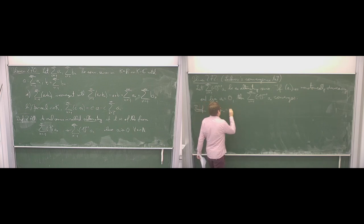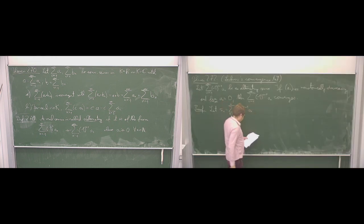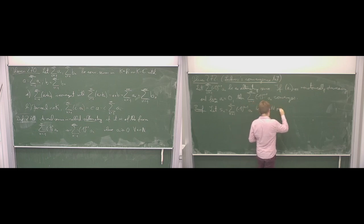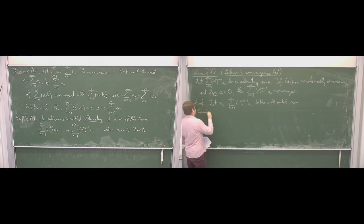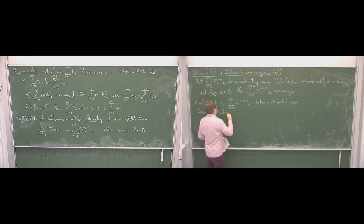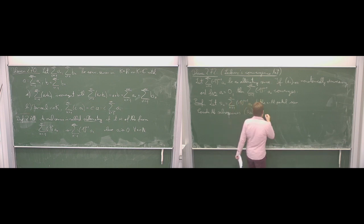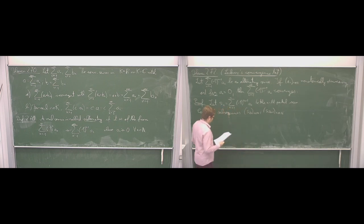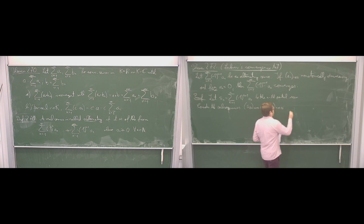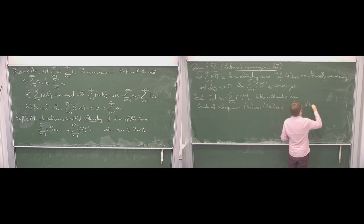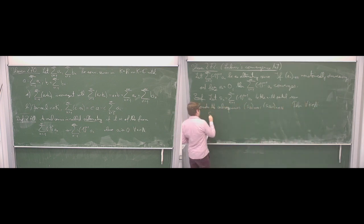To see this, we let S_n denote the n-th partial sum: the sum from k equal to 1 to n of minus 1 to the power of k plus 1 times a_k. We consider two subsequences: the even values S_{2k} and the odd values S_{2k+1}, where k is in ℕ. This is because the sign behavior is different, and these subsequences have surprisingly nice properties.